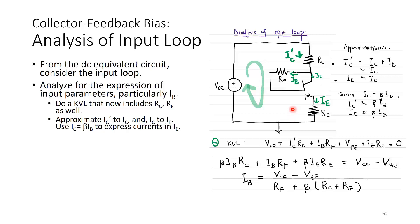We analyse the input parameters by doing KVL around the input loop. KVL gives: −VCC + IC′RC + IBRF + VBE + IERE = 0. Here IC′ denotes the current through RC, which is IC plus IB. Since IB is in the microamp range and IC in the milliamp range, IC′ ≈ IC and IE ≈ IC. Since IC = βIB, we have IC′ ≈ βIB and IE ≈ βIB.